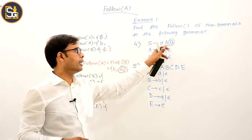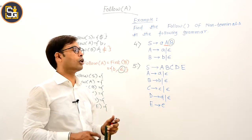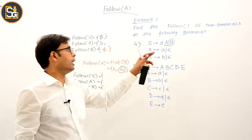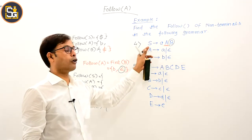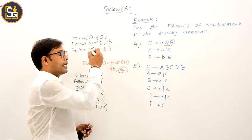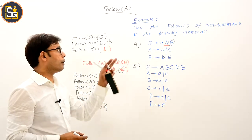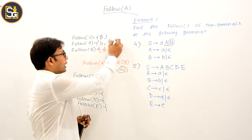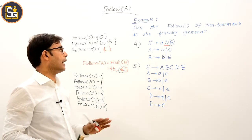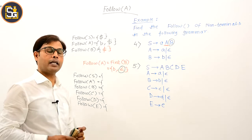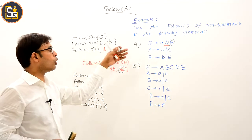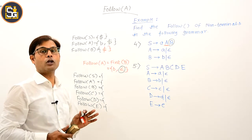Now finding FOLLOW of capital A: since capital A's immediate right is nothing, rule 4 applies — FOLLOW of capital A equals FOLLOW of S. Therefore dollar is also included, unioned in. No other possibility remains for A. This is the final answer for all non-terminals: FOLLOW(S) = {$}, FOLLOW(A) = {b, $}, FOLLOW(B) = {$}.